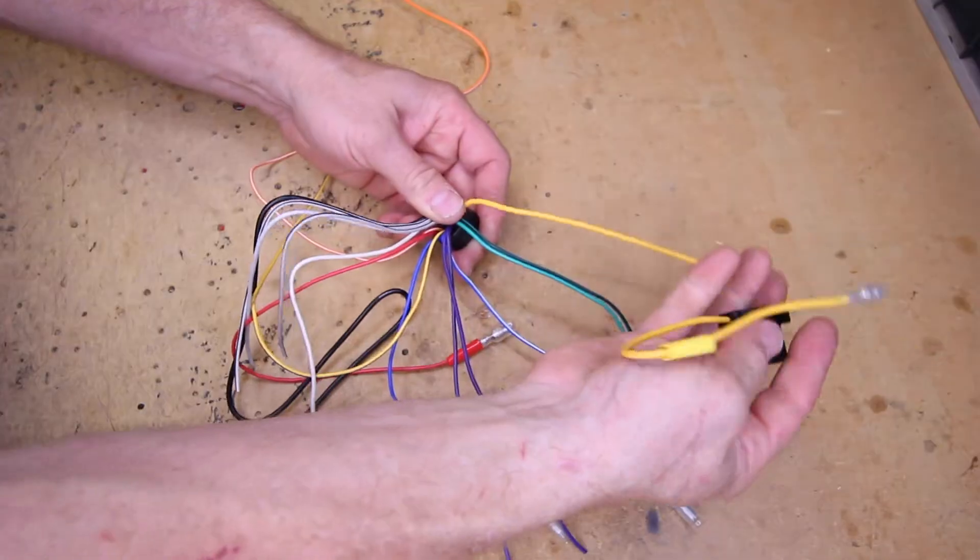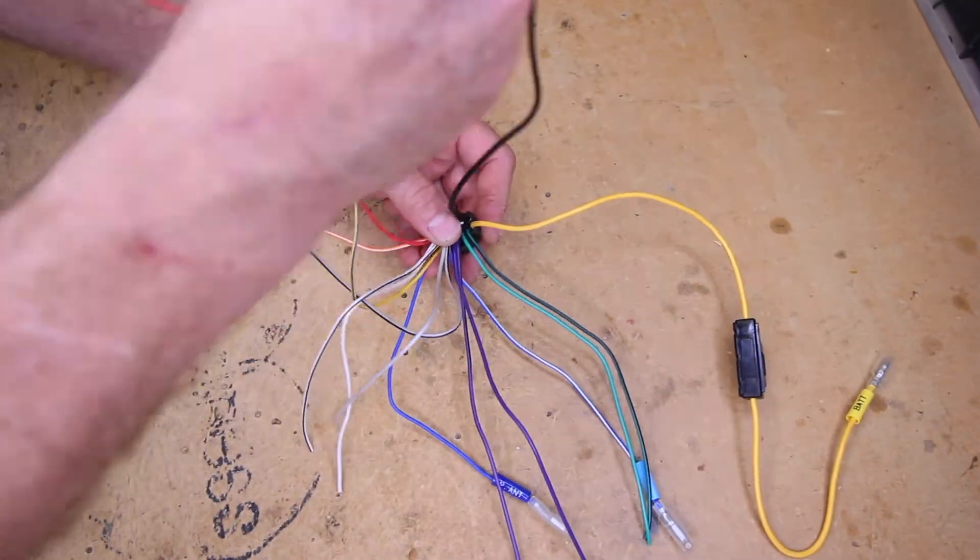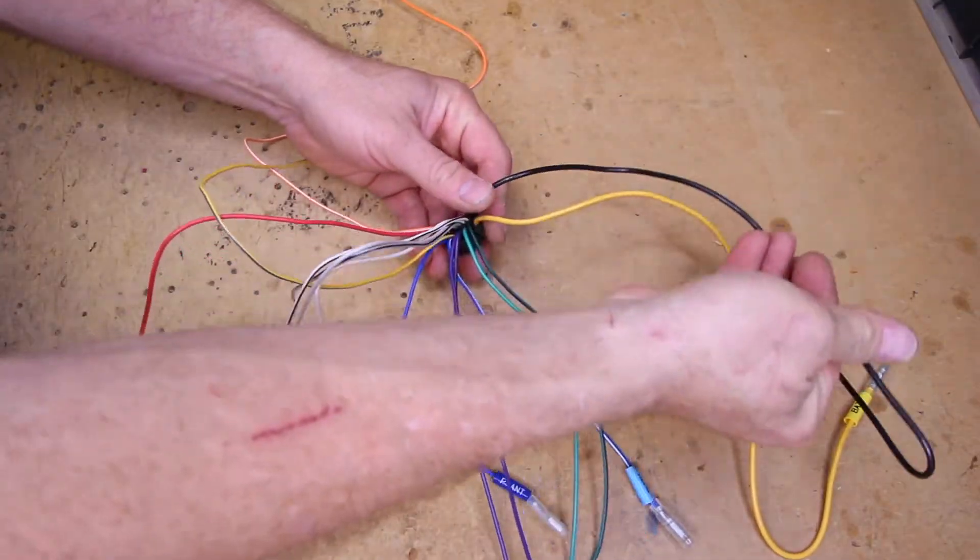You have the big fat yellow wire. This is going to be your constant 12 volts, also known as memory. You have a big black wire, which is ground.